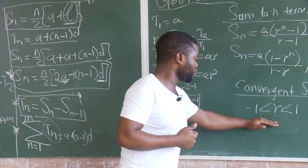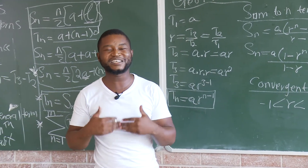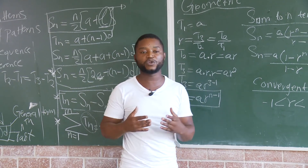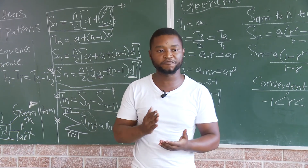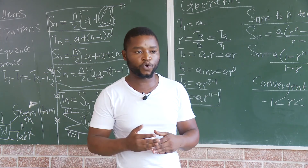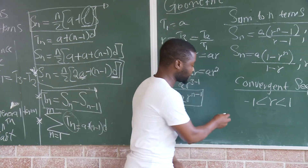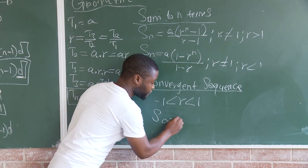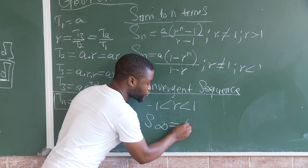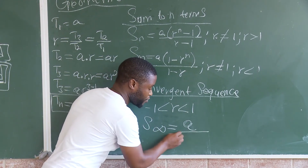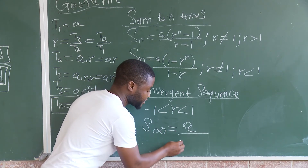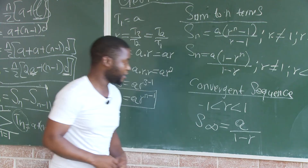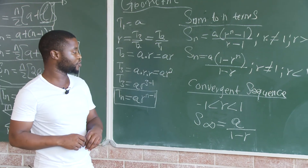So, we have a sum to infinity. The formula for sum to infinity is: S infinity equals A over 1 minus R. That is the formula.